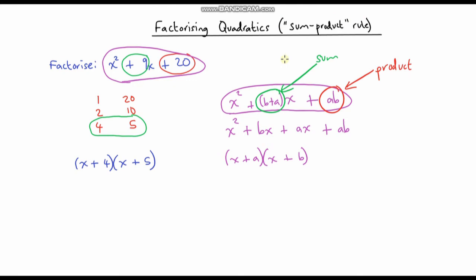So hopefully this short video just gave you a better understanding of where this sum product rule comes from when we're factorizing quadratics. It doesn't just work for integers - we can put any numbers in here, so even if you've got fractions or decimals or even irrational numbers, this sum product rule will still work for all of those different scenarios. Thanks for watching.